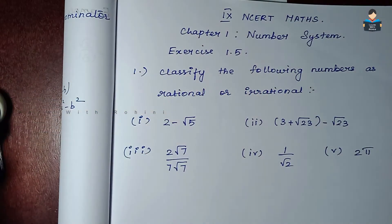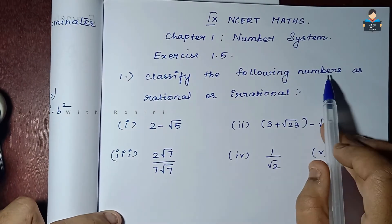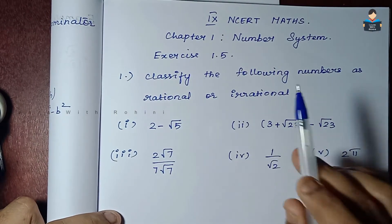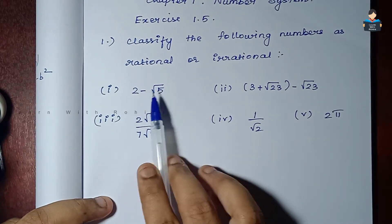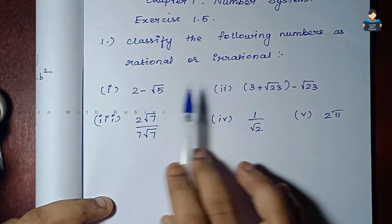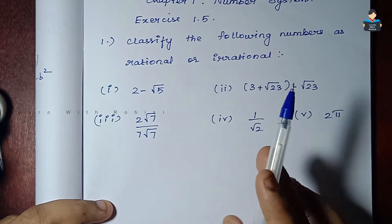Hello everyone, welcome to our channel. In this video, 9th standard NCERT Math Chapter 1 Number System, Exercise 1.5, first sum: classify the following numbers as rational or irrational.